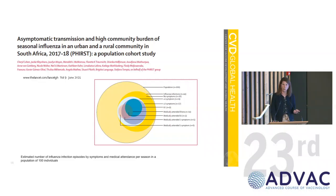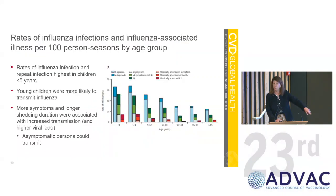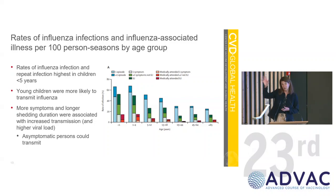Cheryl Cohen does beautiful work. In this paper in The Lancet, instead of testing people when they have fever and cough, she started in a community and tested everyone for flu at periodic intervals — whether they were sick or not. What did she find? The rates of influenza infection and repeat infection are highest in children younger than five, but many of these are asymptomatic. Children are getting flu, but it's really just the top of the pyramid where we see severe or clinically relevant disease.